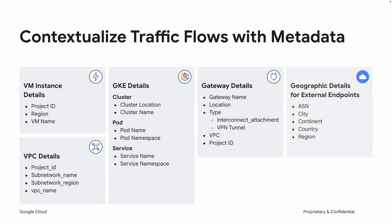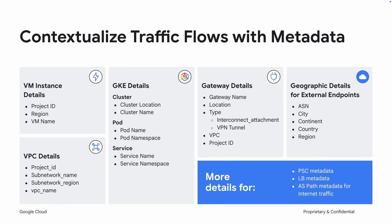And when dealing with internet traffic, you can gain geographic insights like the ASN, continent, country, and city of the internet endpoint. Additionally, there is also metadata for Private Service Connect, load balancers, and AS path for internet traffic. This rich metadata eliminates the need for manual lookups and correlation of information from multiple sources, allowing you to quickly understand the context surrounding each network flow and helping you aggregate the data.